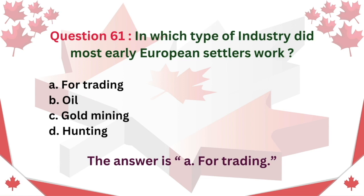Question 61. In which type of industry did most early European settlers work? A. Fur trading B. Oil C. Gold mining D. Hunting. The answer is A. Fur trading.